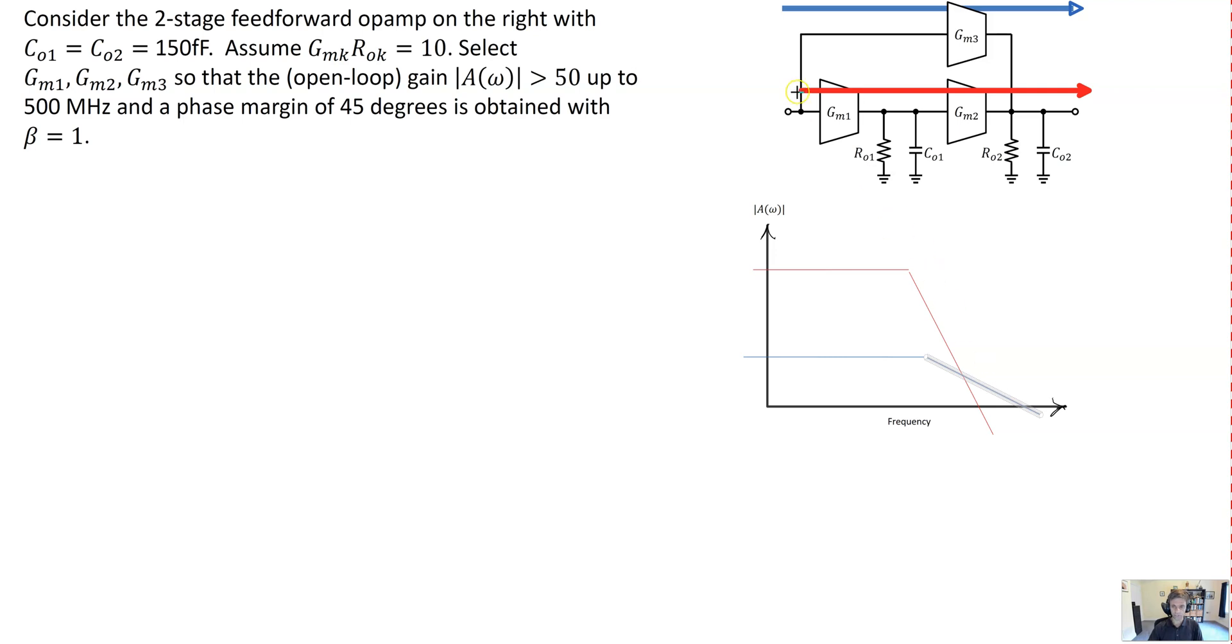So focusing on the red path first, in order to meet our gain spec, we see that the DC gain through those two stages is limited by this requirement here to be 10 times 10 or 100. So in order to ensure that we've got a magnitude response over 50 up to 500 megahertz, we need to ensure that the two poles introduced at these two nodes causes the magnitude response to dip only by 6 dB with respect to that DC gain of 100.